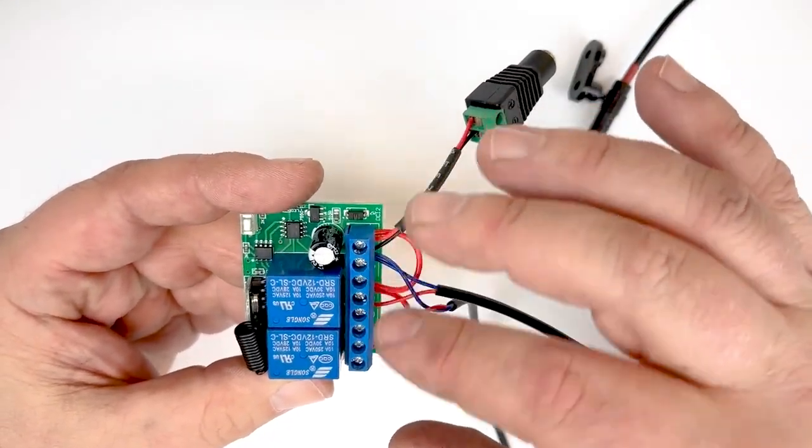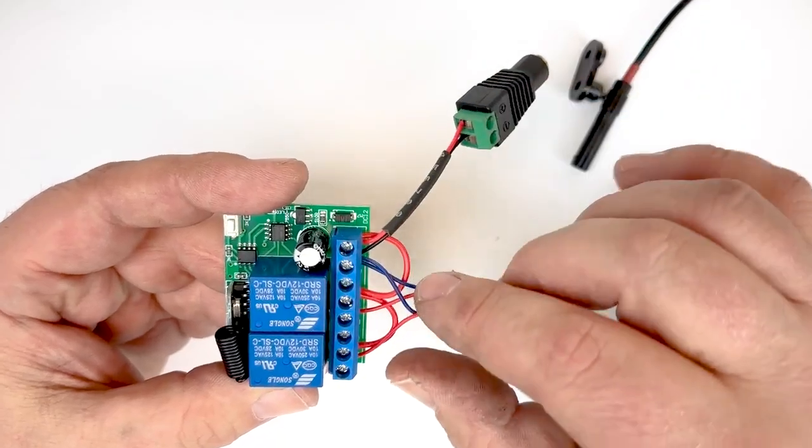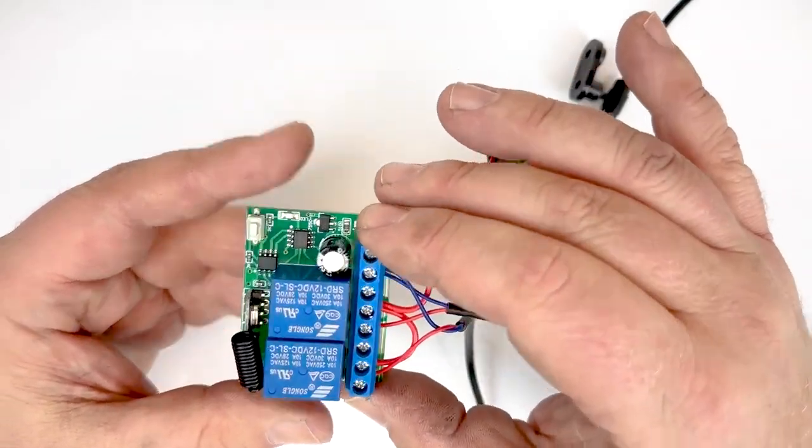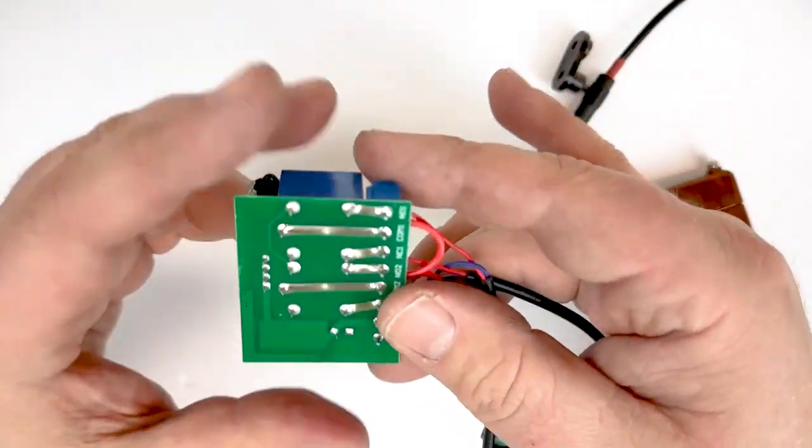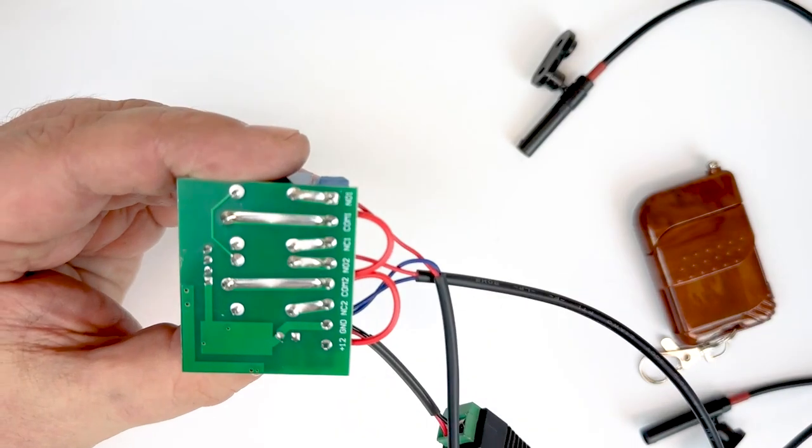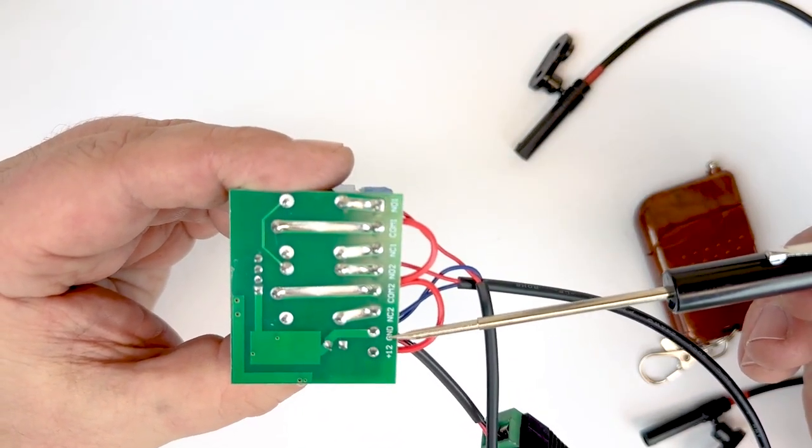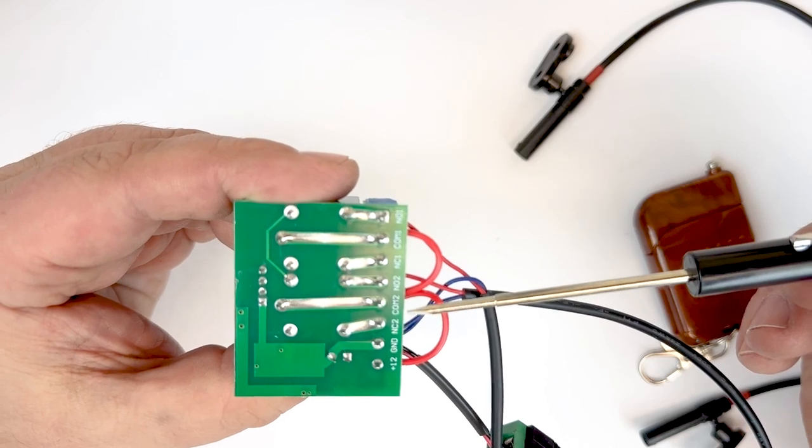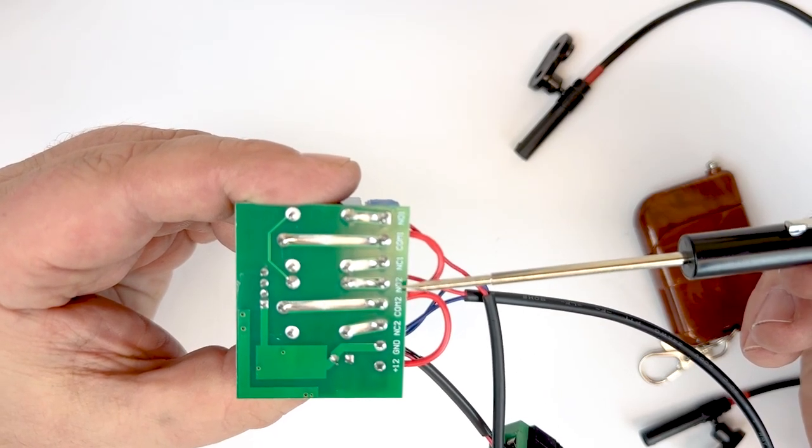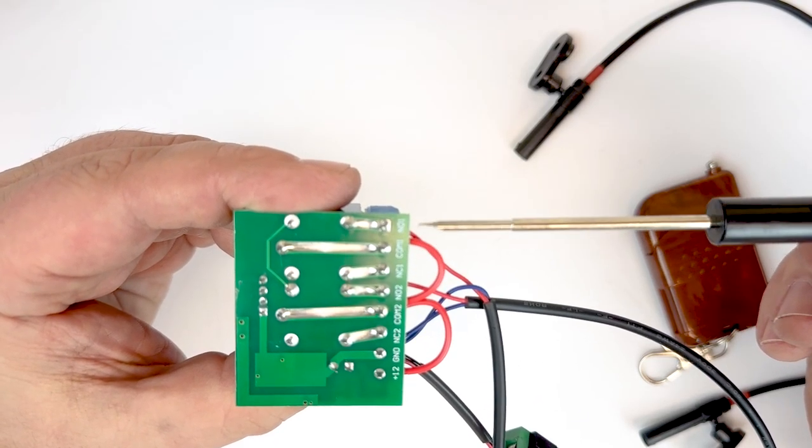One of the most common questions I get is how do you know which terminal is which here on the screw terminals? And typically they'll be labeled on the underside of the circuit board which is the case here. So you can see we have 12 volt plus, ground, then we have NC2, COM2, NO2, NC1, COM1, and NO1.